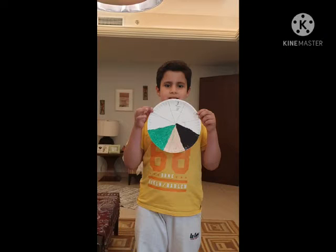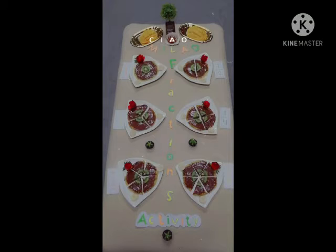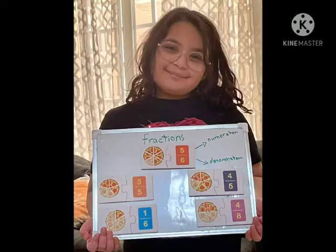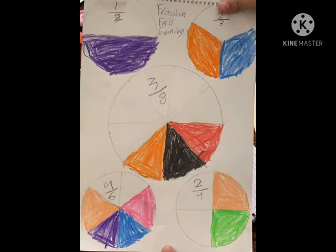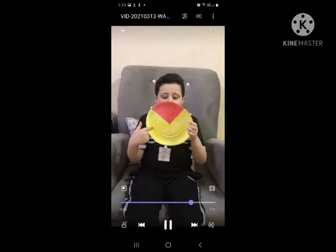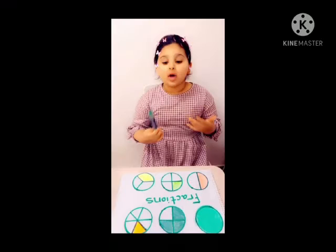Fractions are equal sized parts of a whole. When it comes to halves, there are two equal sized parts that make up one whole. Now try to say these fractions. One half. One third.